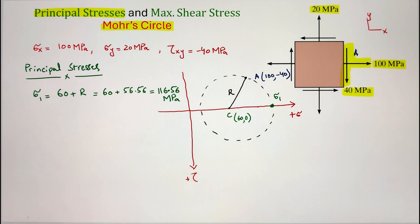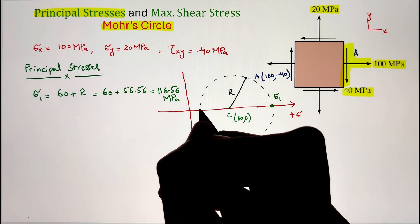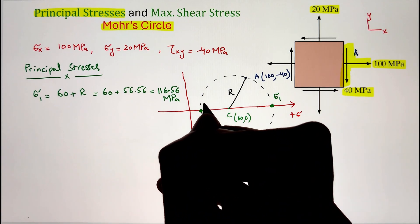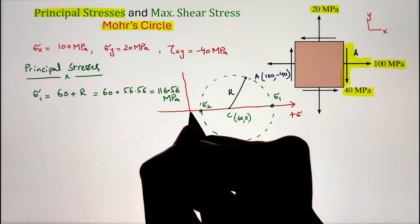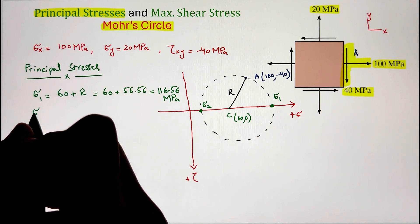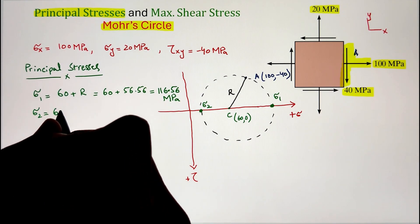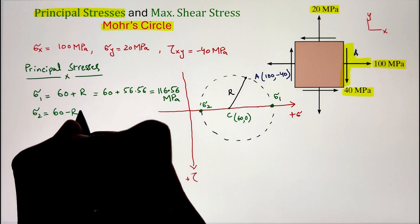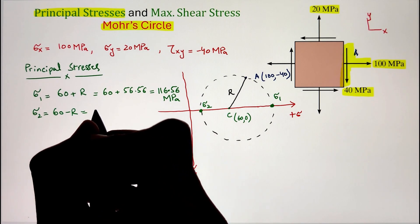On the other end, in order to identify the minimum normal stress, subtracting the radius from the center gives sigma 2, and the value is coming as 3.43 megapascal.